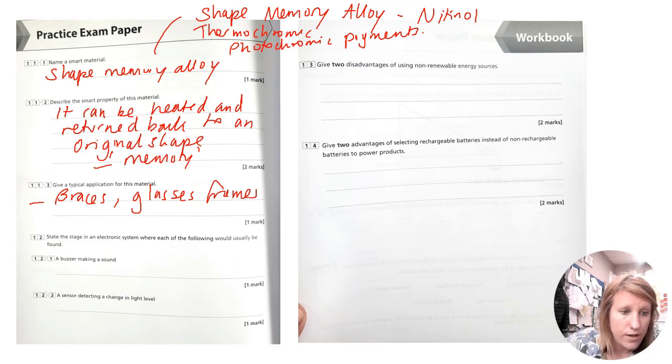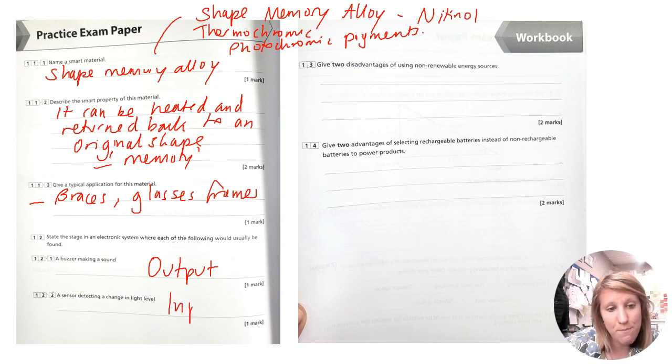State the stage in an electronic system where each of the following would usually be found. So this is systems. Again, this seems to be coming up quite a lot. So a buzzer making a sound, that is an output because that's at the end. A sensor detecting a change in light level. That's an input because that is what might trigger a speaker or a buzzer or a light. So output input.